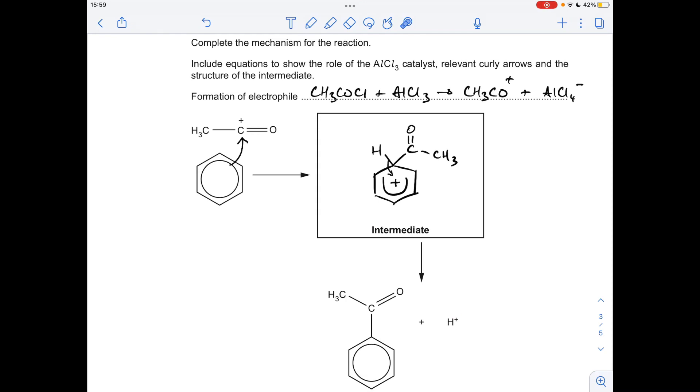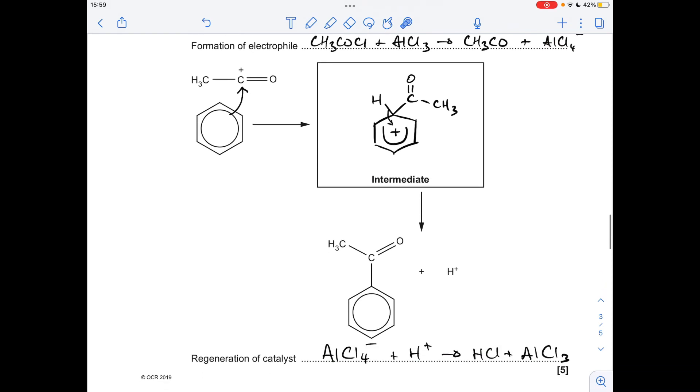And then we just need to show the role of the catalyst. So we're going to react the H plus ion with the AlCl4 minus ion, make the other product HCl, and there's the catalyst reformed.